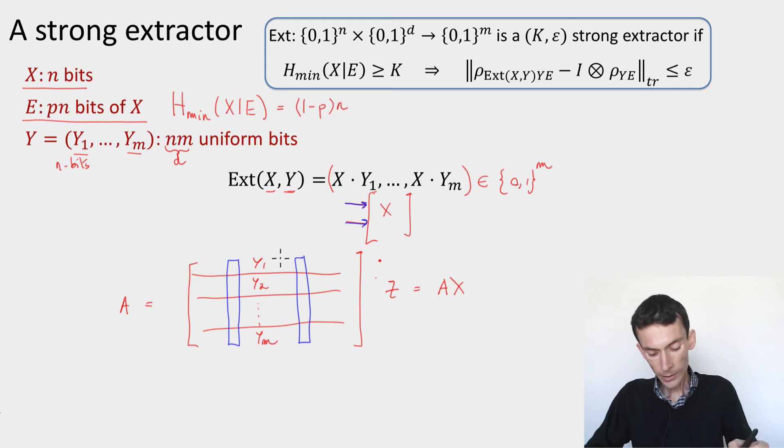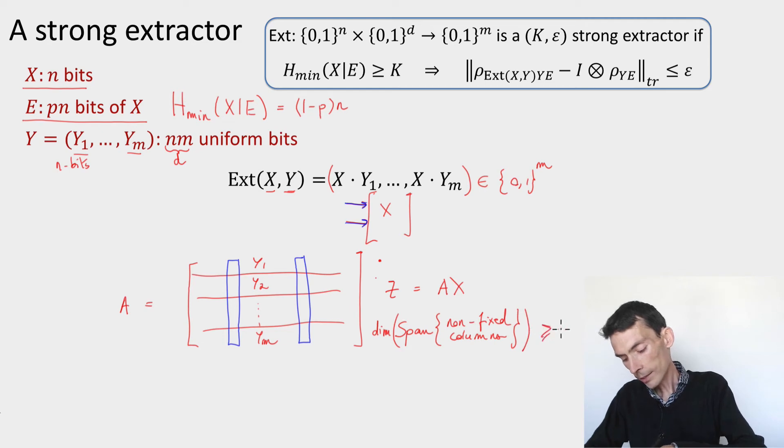What you can see is that as long as the span of the non-fixed columns, as long as this has dimension at least the dimension of the output, m, so let me write it like this, dim of the span of the non-fixed columns is at least m, then the output is going to be uniformly distributed. Because if the span of these columns is m, the dimension is m, it's the whole space, and now I'm taking a random linear combination of the non-fixed columns. If they span the whole space, I'm going to end up with a uniformly random vector. So as long as this is the case, I'm safe.